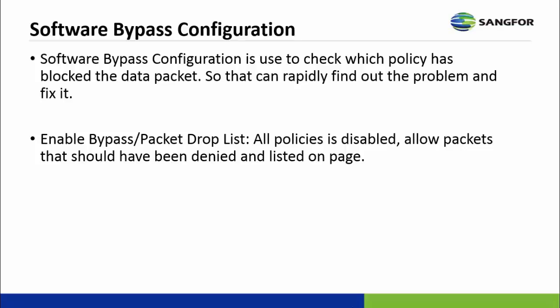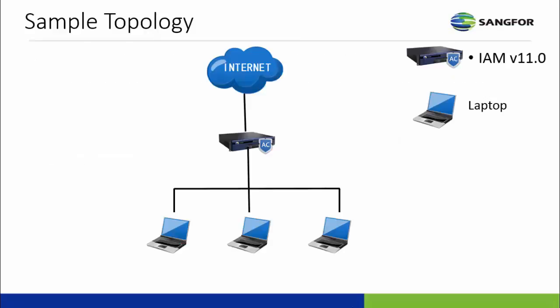The enable bypass or packet drop feature lists all policies in IAM, disables them, and allows packets that should have been denied to be listed on the page.